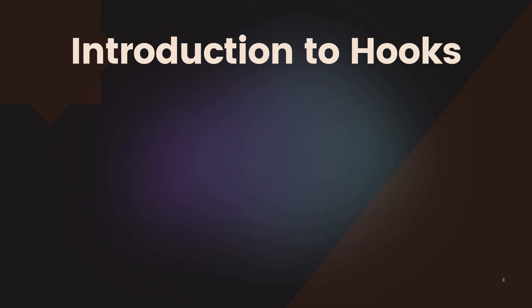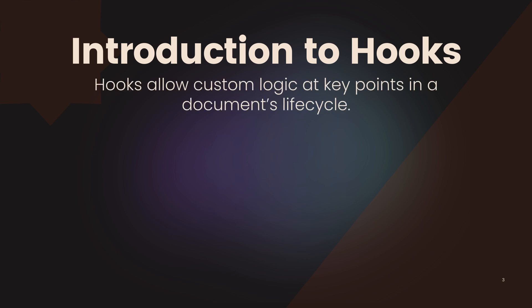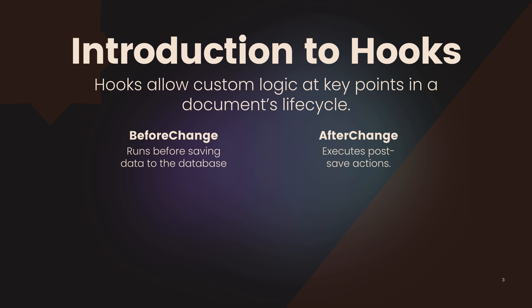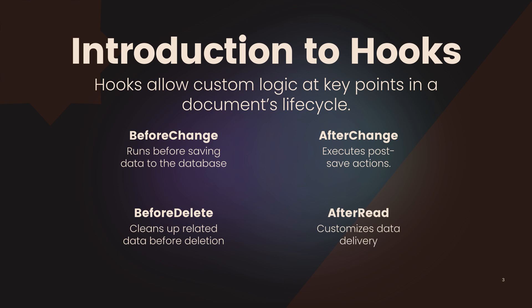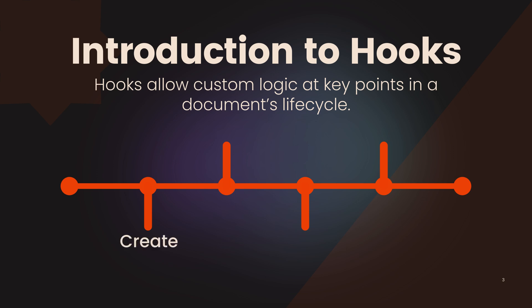Hooks are a core feature of Payload CMS, providing developers with a way to execute custom logic at specific points in a document's life cycle. Think of them as event handlers for your data. There are four main types of hooks. Before change runs before a document is saved to the database — perfect for validation or modifying data. After change executes after a document is saved — use this for workflows like sending emails or updating logs. Before delete runs before a document is deleted, ideal for cleaning up related data like orphaned references. After read customizes data before it's delivered to an API consumer. For example, you can use a before change hook to automatically generate or validate a slug before saving.